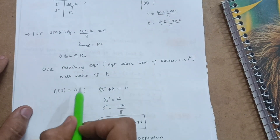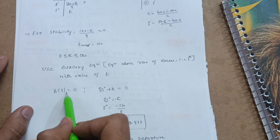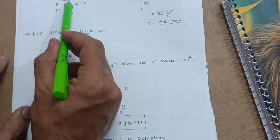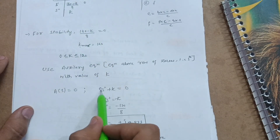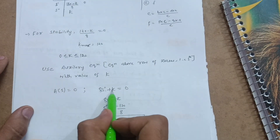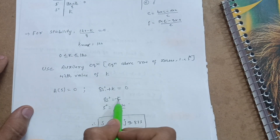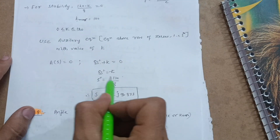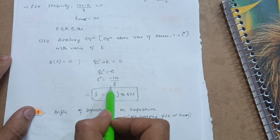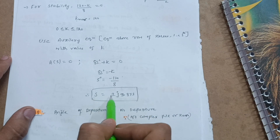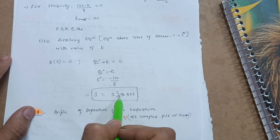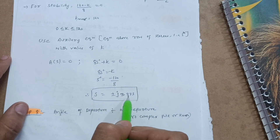The auxiliary equation is formed from the s² row with k = 120: 8s² + k = 0, so 8s² + 120 = 0. Therefore s² = −120/8 = −15. Solving for s gives s = ±j × 3.873, which is an imaginary (purely imaginary) number, confirming marginal stability.